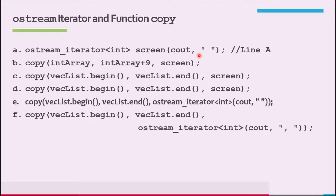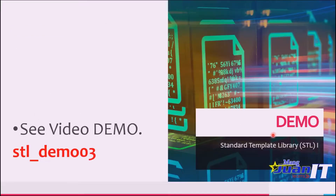Consider statement B: copy(int_array, int_array + 9, SCREEN) — this outputs the elements of int_array on the screen. Similarly, copy(backlist.begin(), backlist.end(), SCREEN) outputs the elements of the container backlist on the screen. We will frequently use the function copy with an ostream iterator to output container elements. We can also directly specify an ostream_iterator inside the function copy. For example, copy(backlist.begin(), backlist.end(), ostream_iterator<int>(cout, ", ")) outputs the elements of backlist with a comma and space between them.